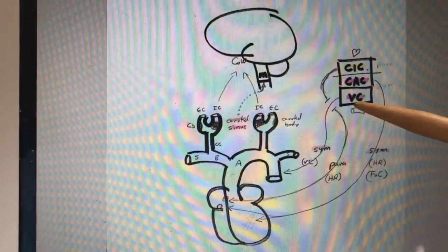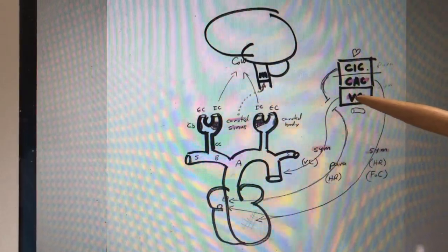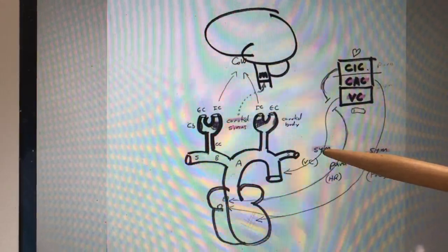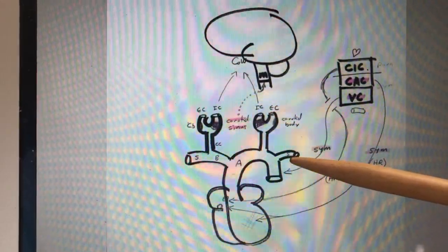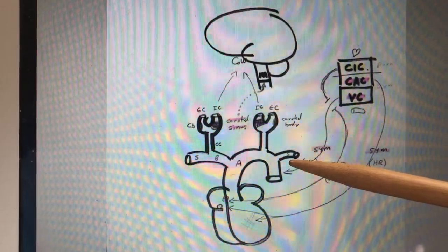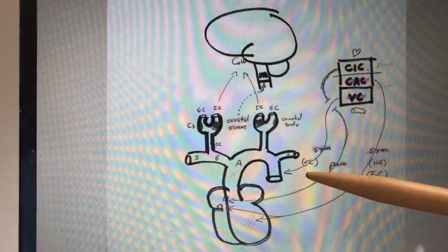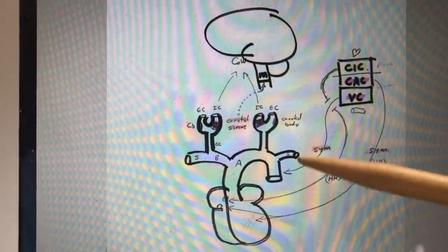Also, the carotid sinus communicates with the vasomotor center, and the vasomotor center will respond by sending less sympathetic signals to the blood vessels, thus allowing them to expand. Less vasoconstriction means more space, and that means the blood pressure would go down.